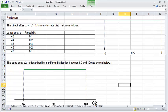Now that you know how Excel's random number generator works, I can show you how to use it to generate the numbers for our random variables. First, let's take a look at the direct labor cost, C1. It has a discrete distribution. So we have five possible values, 43 through 47, with the associated probabilities.